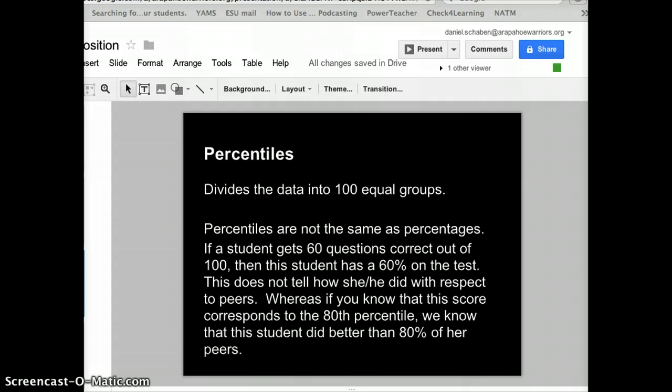60% could have been the best score for that particular test, or maybe it was the worst score. If we want to compare within our peers or peer group, we're going to use a percentile rank or percentile. So if we knew that a 60% corresponded to the 80th percentile, we would know we did 80% better than our peers.